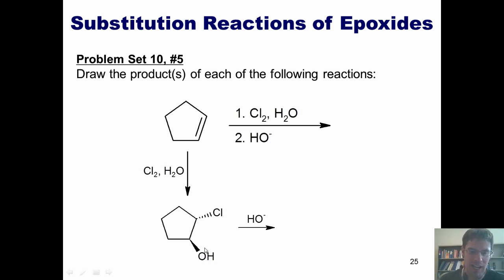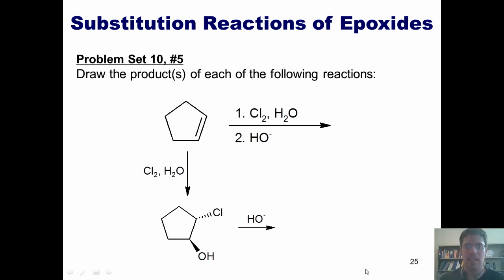The O- will cyclize down, form a bond with this carbon, and kick off a chloride SN2 style, giving this product which is an epoxide.